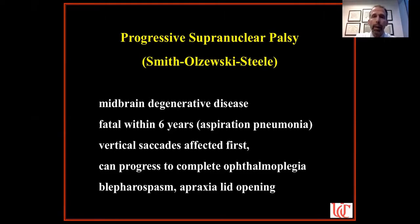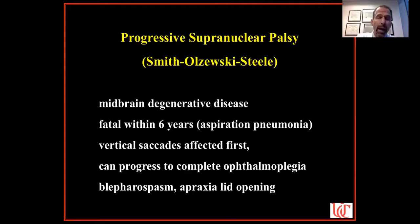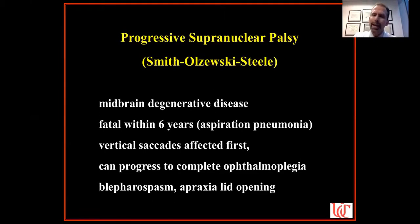Patients with PSP sometimes have not only blepharospasm but apraxia of eyelid opening — where the eyes close and just won't open. It's not a forceful closure; they just won't open when the patient relaxes. Combined with blepharospasm — constantly blinking and shutting — that's a very difficult combination. PSP is occasionally misdiagnosed early on as Parkinson's disease, and patients are sometimes sent to me by neurologists asking whether the eyes look like Parkinson's or PSP.